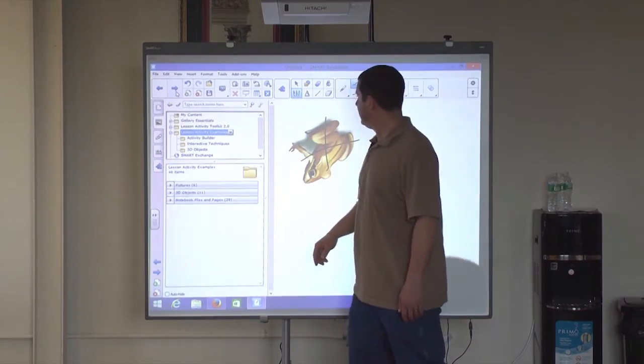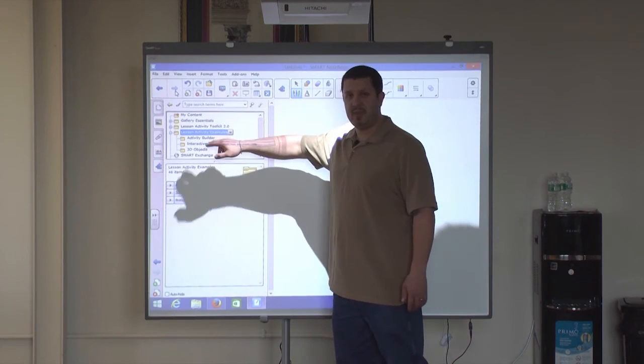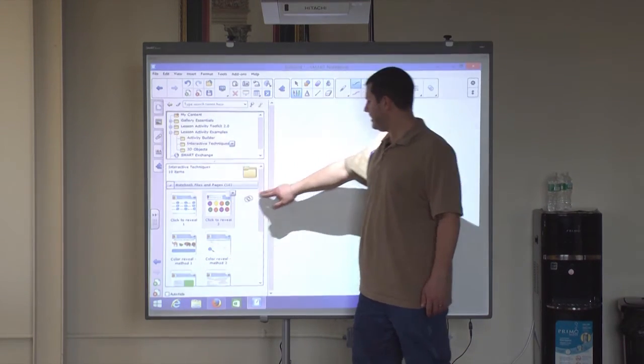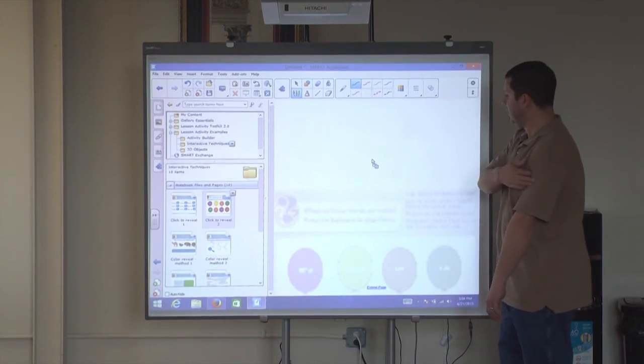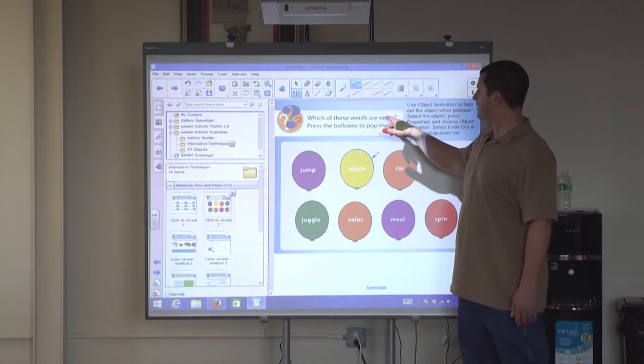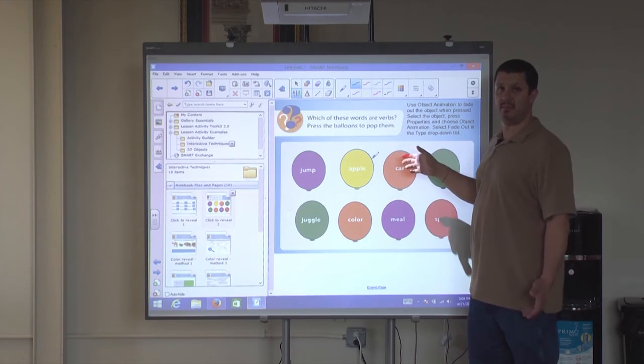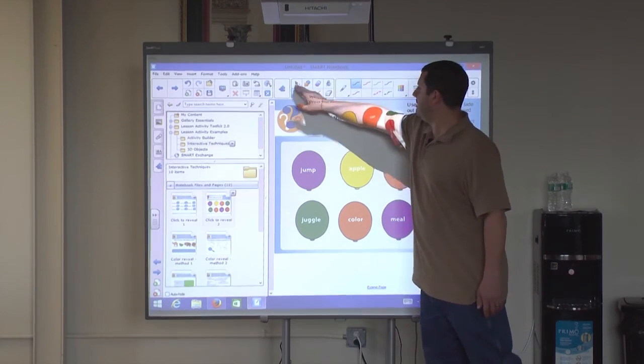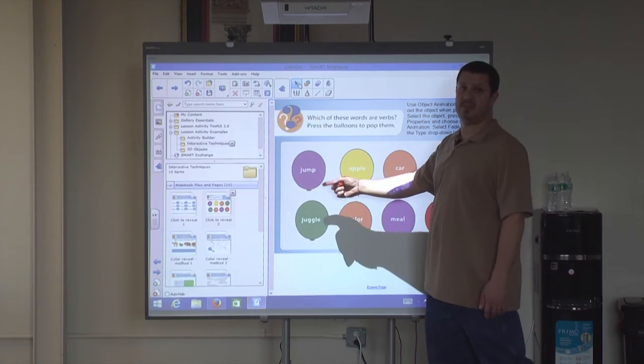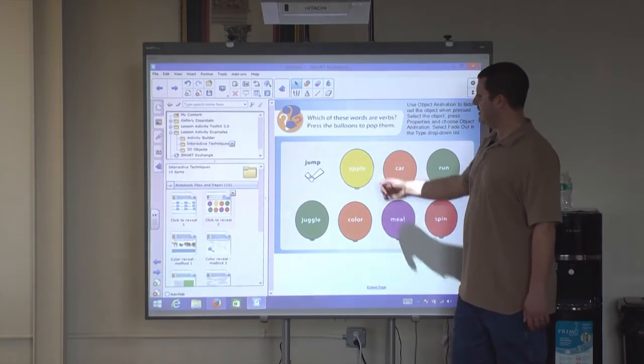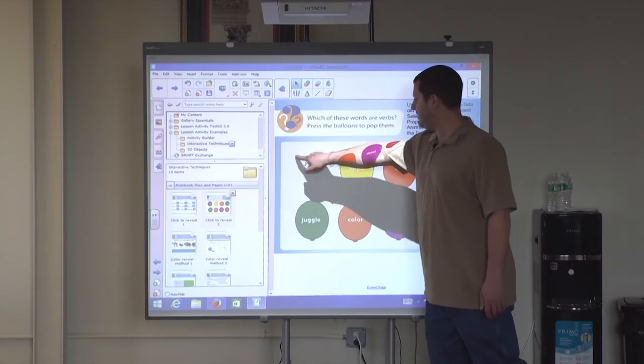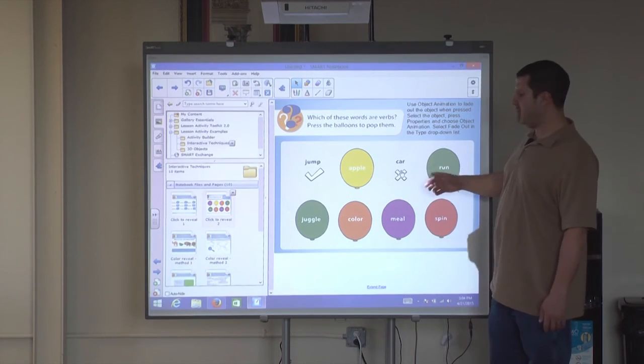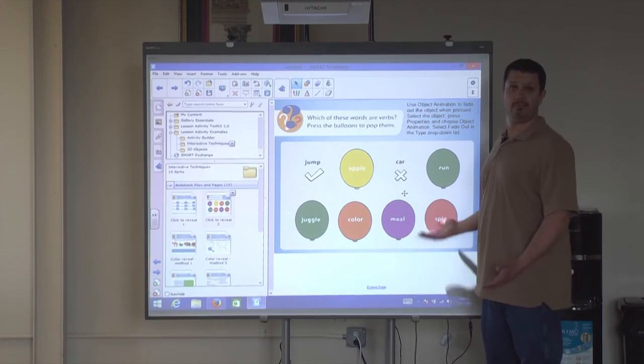I'll give you a few examples. Let's start a new page here. Here we go. We have our activity builder, which I just mentioned. We can go to some interactive techniques. Now, something like this is what I was referring to as an activity. So we just let this load here. It says, which of these words are verbs? Let's press the balloons to pop them. So you can actually make something like this yourself. And once it's up here, you can have a student come up and look and say, jump. Well, jump sounds like a verb to me, so I'm going to tap on it. The balloon pops or disappears. And we have a checkmark, meaning it's correct. Well, now we can click on car. And the balloon pops, and there's an X, because a car is not a verb. So there you go.